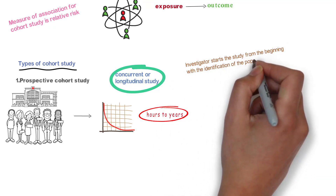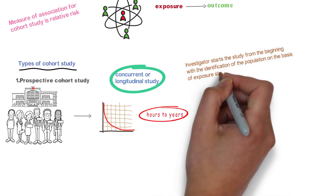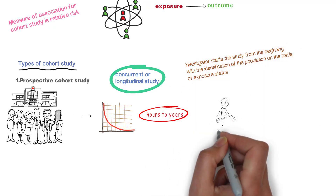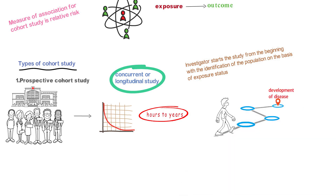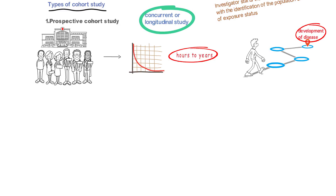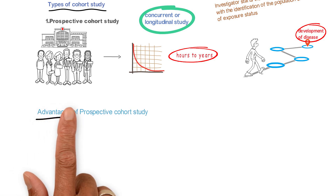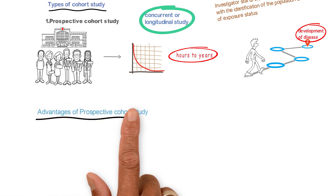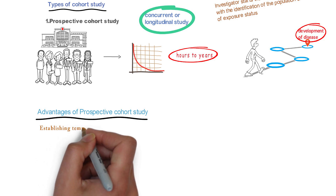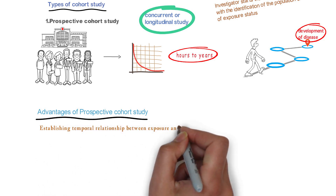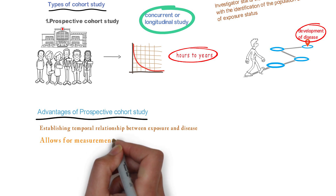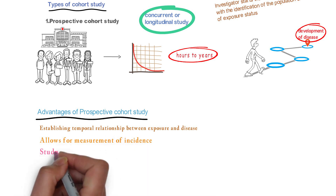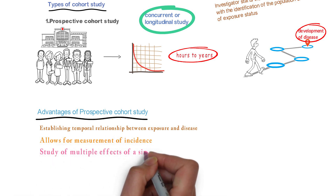The investigator starts the study from the beginning with the identification of the population on the basis of exposure status and then follows them over time for the development of disease. Advantages of prospective cohort studies: establishing temporal relationship between exposure and disease, allows for measurement of incidence, and study of multiple effects of a single exposure.